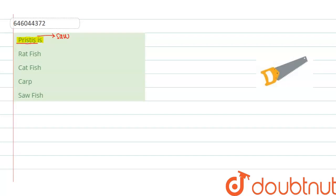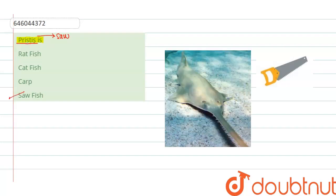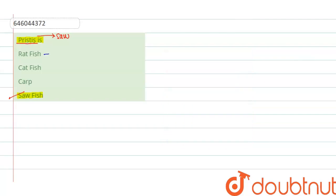So Pristice is also known as sawfish, so the fourth option will be the right answer. The first option is ratfish — ratfish is a kind of fish belonging to the Chimaeras. Chimera is a group of fishes which resemble sharks.